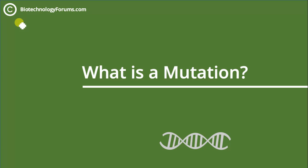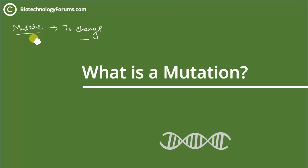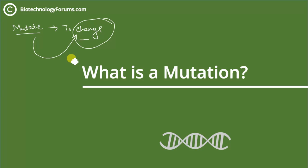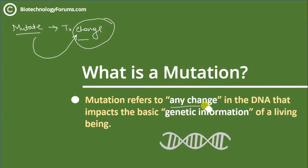To understand the definition of mutation, you need to understand the meaning of the word 'mutate'. To mutate is to change. So when we say that we have mutated something, we actually mean that we have brought about some change into it. Now in biological context, where does that change take place? In biology, that change happens at the DNA level. So any change in the DNA that will actually impact the genetic information of a living being is called a mutation.